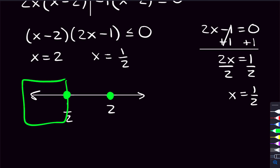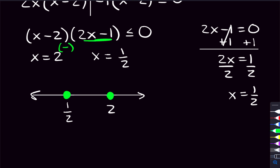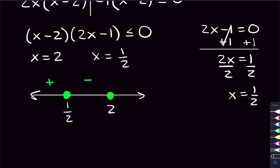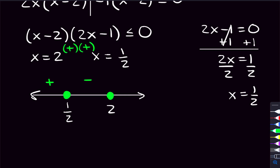Now let's focus on our three regions. We'll pick a number less than one half — let's go with zero. Plugging in: zero minus two is negative, and two times zero minus one is negative. Negative times negative is positive. For the second region between one half and two, let's go with one: one minus two is negative, and two times one minus one is one, which is positive. Negative times positive is negative. Lastly, for a number greater than two, let's go with three: three minus two is positive, and two times three minus one is five, positive. Positive times positive is positive.